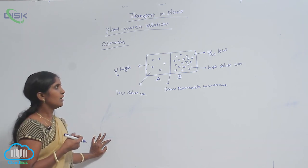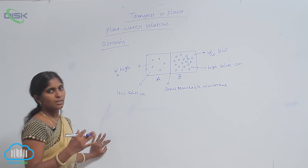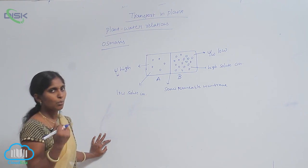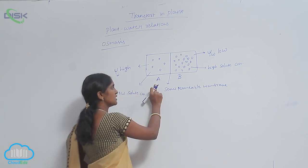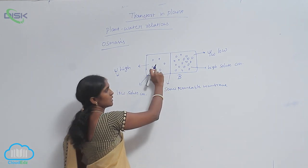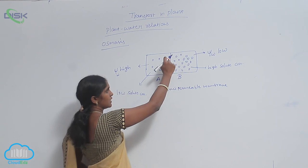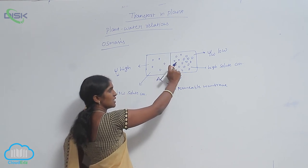Where the chemical potential is high, there the water is more. So, in the A system, A cell, the chemical potential is less. But in B system, the chemical potential is high. The solute concentration is high.